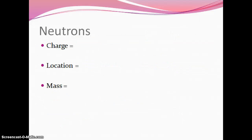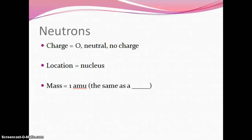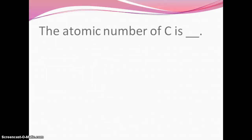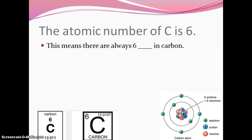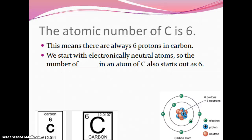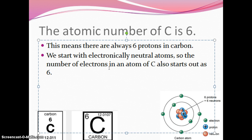Let's go to our next subatomic particle: neutrons. Neutrons have a charge of zero — neutral, no charge. Neutrons are located in the nucleus. Each neutron has a mass of one AMU, the same as a proton. Carbon's atomic number is six, so there are always six protons in carbon. Starting with an electrically neutral atom, the number of electrons in carbon also starts at six: plus six minus six equals zero.